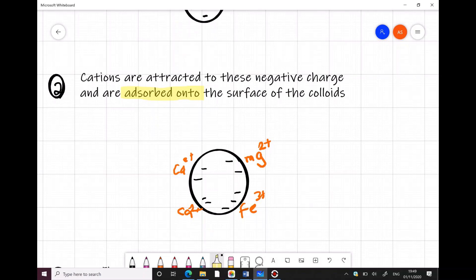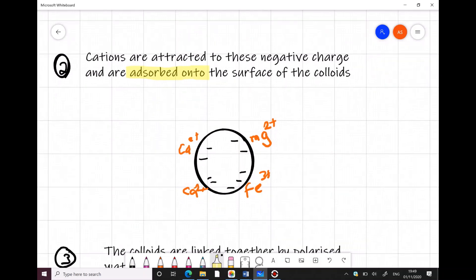These cations that we discussed earlier are attracted to the negative charges, much as you would see in a magnet when the negative end is attracted or sticks to the positive end. And they are adsorbed onto the surface of the cation. So they literally stick onto the surface of the colloid. So you've got calcium, you've iron, magnesium there stuck to the surface of our colloid.